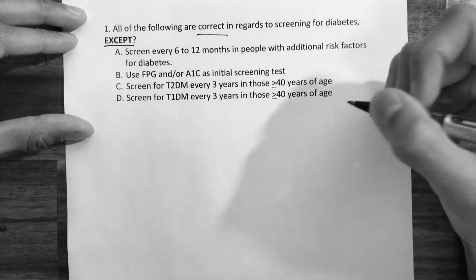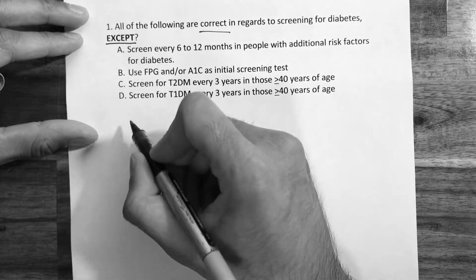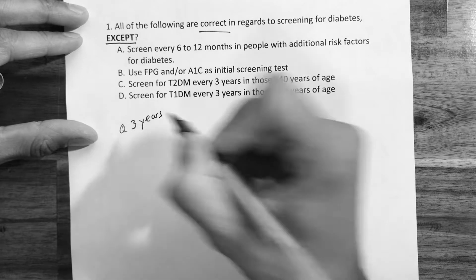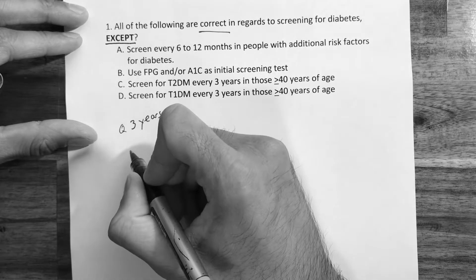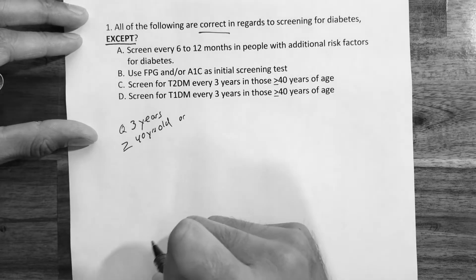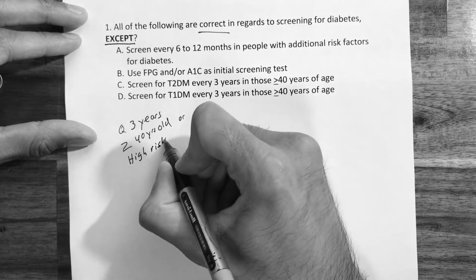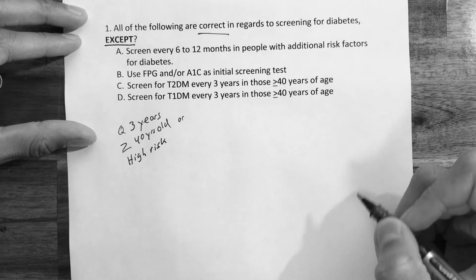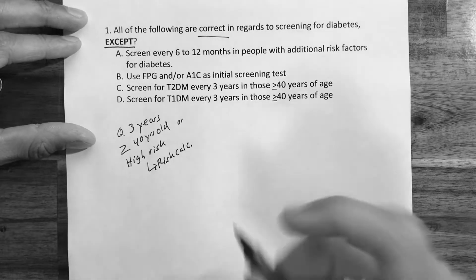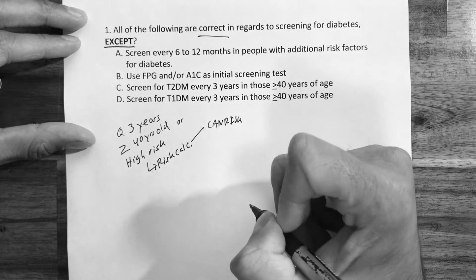To answer this question, let's go through the screening process. We screen every three years in individuals greater than or equal to 40 years of age, or those who are at high risk. Determining high risk is done using a risk calculator. There are two to be familiar with: CAN risk and FIN risk. These are just risk calculators that help classify a person based on their risk of developing diabetes.